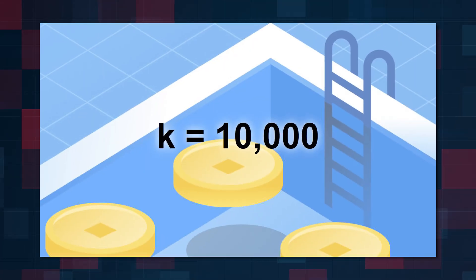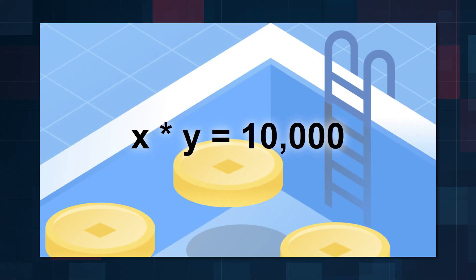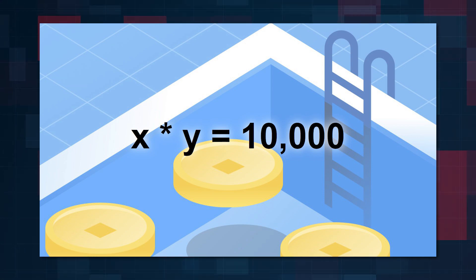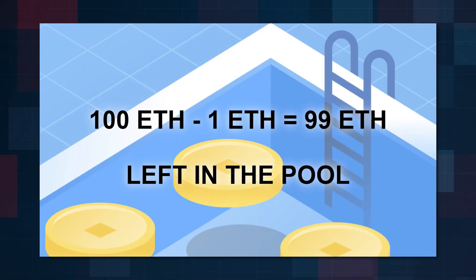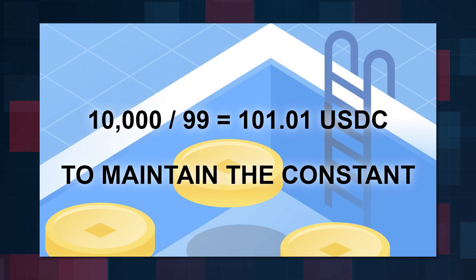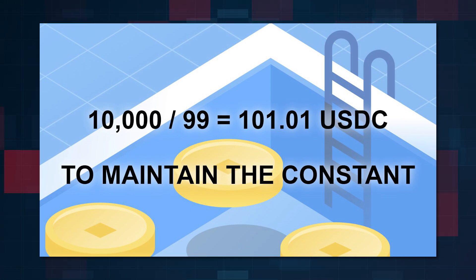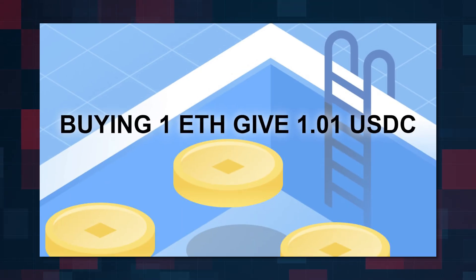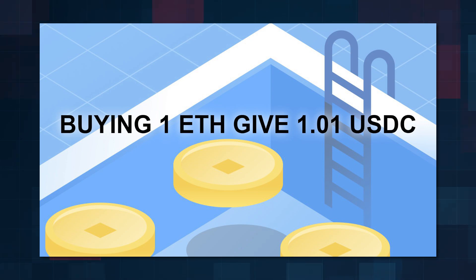At constant K, the fixed product is 10,000. Under these conditions, the pool must maintain the ratio of the two tokens such that X × Y always equals 10,000. If a user buys one Ethereum, there will be 99 Ethereum left in the pool. To maintain the constant at 10,000, the pool must have 101.01 USDC — in other words, approximately 1.01 USDC needs to be transferred to the pool for the purchase of one Ethereum.